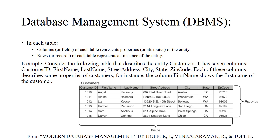In a relational database, each table has rows and columns. The columns of the table represent properties — also called attributes — of the entities. For example, a table of customers has seven columns: customer ID, first name, last name, street address, city, state, and zip code. These columns represent some properties of the customers, helping to describe each customer.